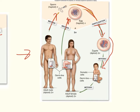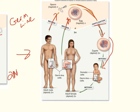Meiosis occurs in sexually reproducing organisms from germline cells — those are the cells found in the testes or ovaries of humans. Meiosis is similar to mitosis, but involves two divisions that end in four haploid cells, a reduction from 2N (diploid) to N (haploid). The phases of meiosis are given the same names as in mitosis — prophase, metaphase, anaphase, and telophase — with a Roman numeral to indicate the first or second division.